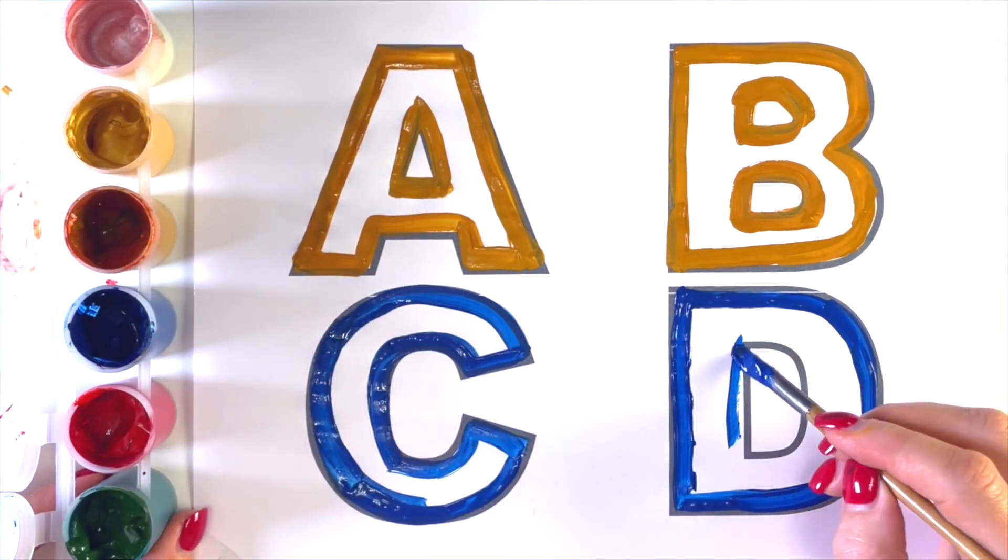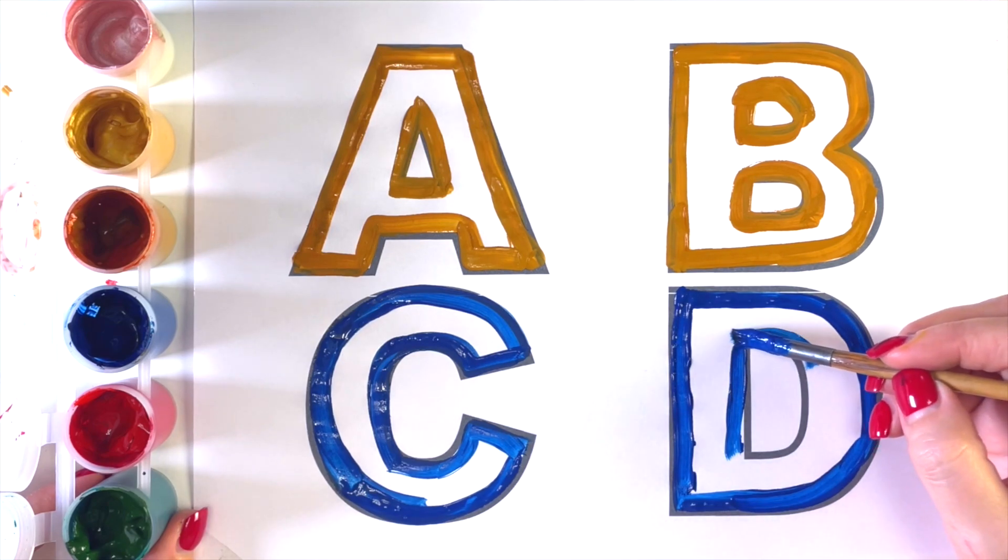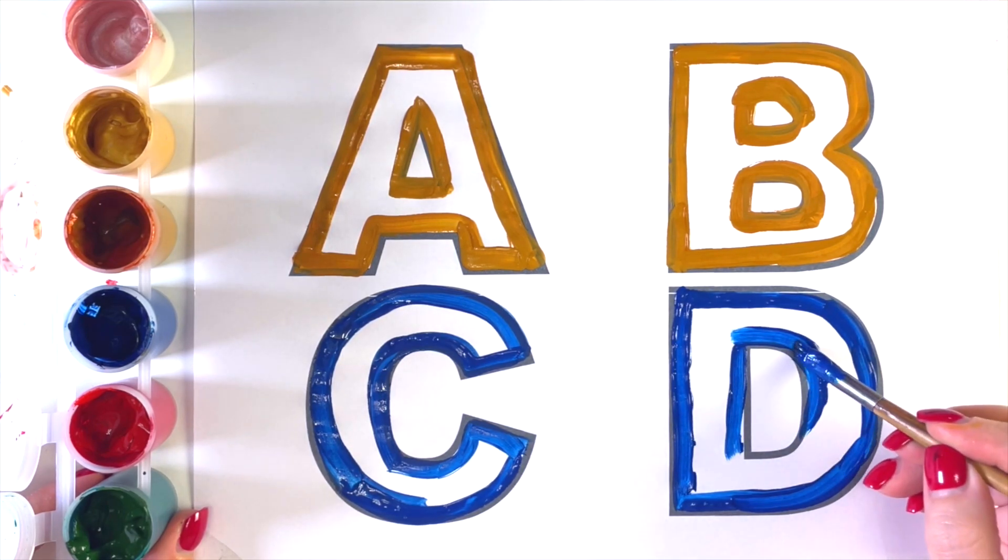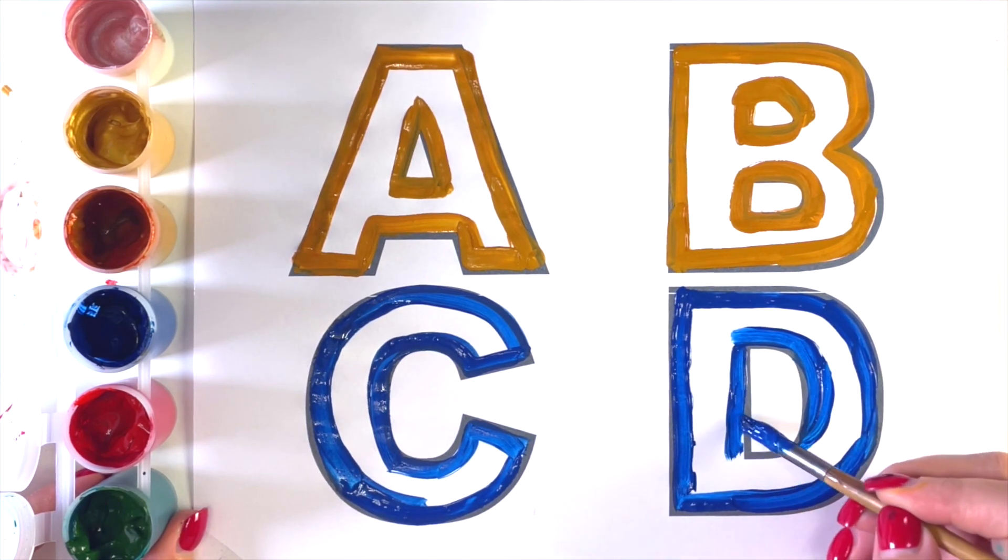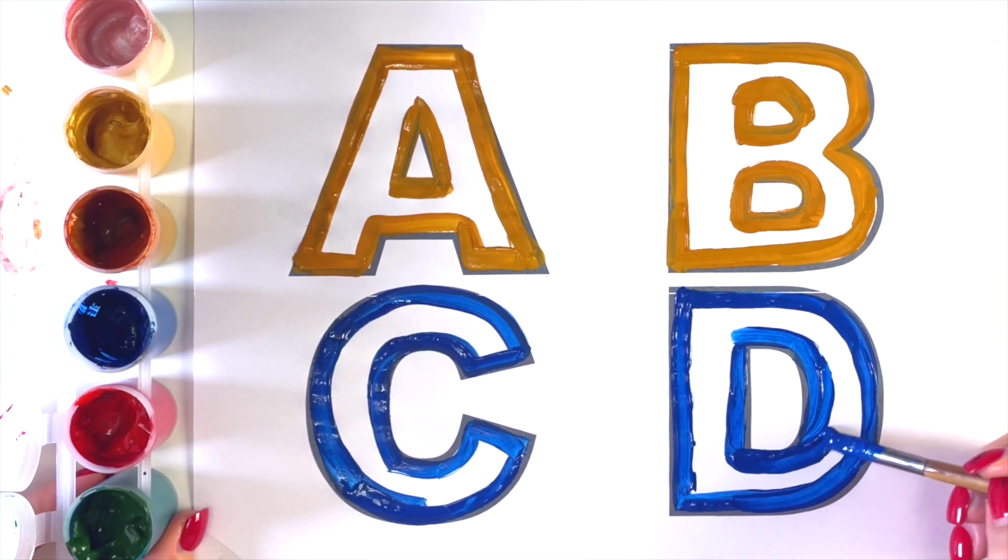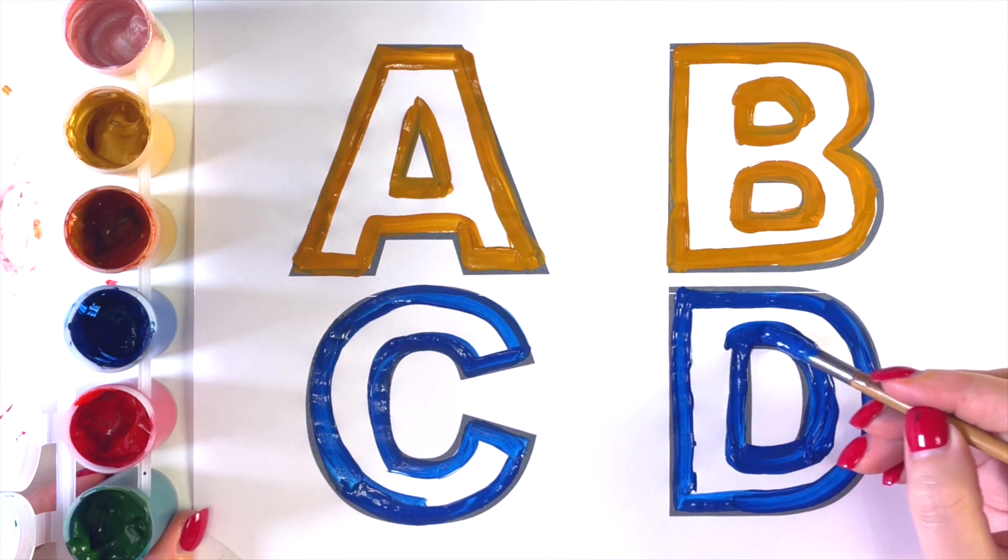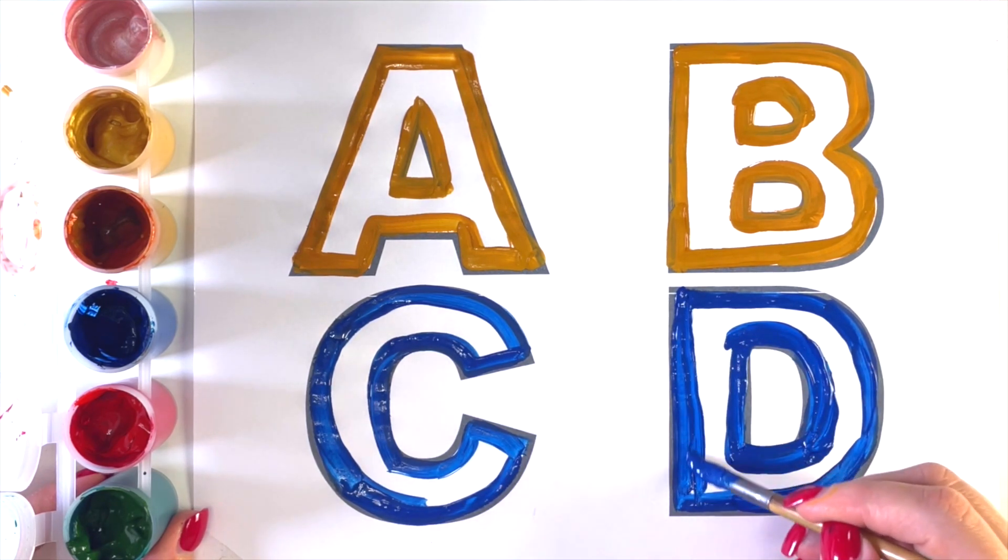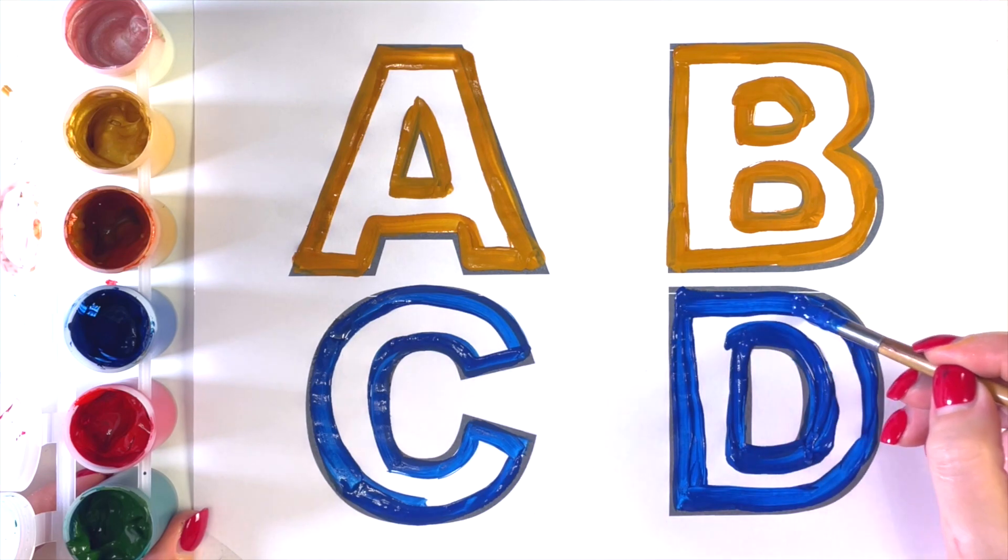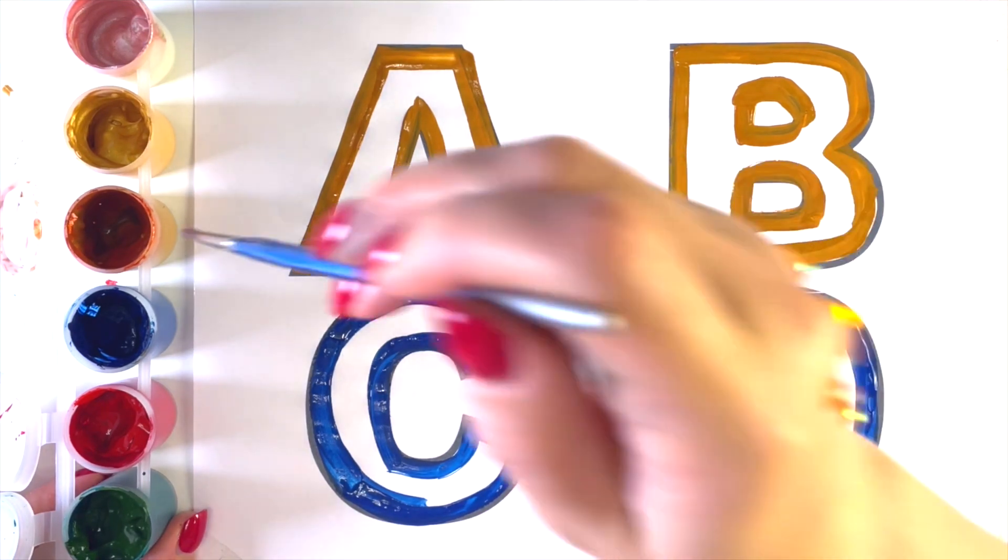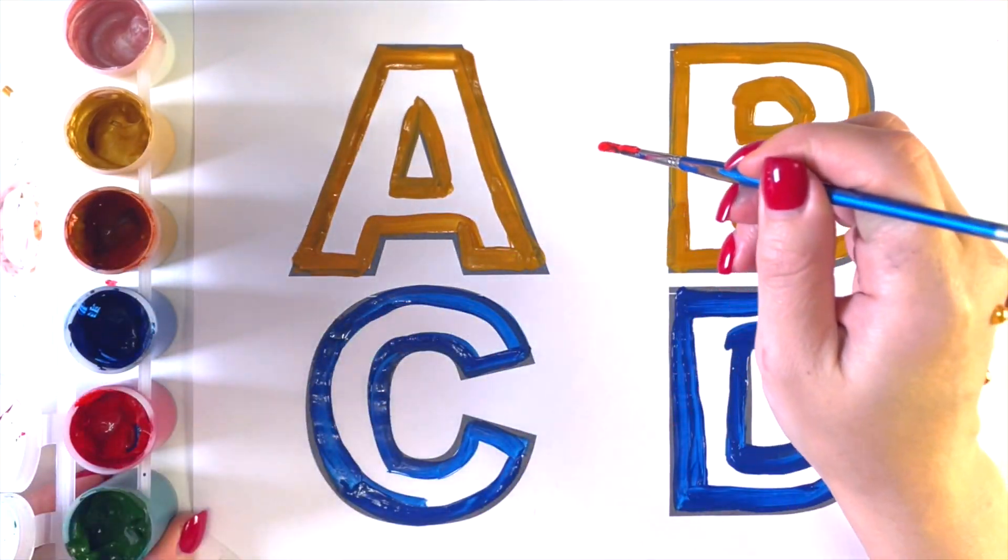D for Dog. A, B, C, D, E, F, G, H, I, J, K, L, M, N, O, P, D for Day. D, U, V, W, X, Y, and Z. Now I know my ABCs. Next time won't you sing with me. A,